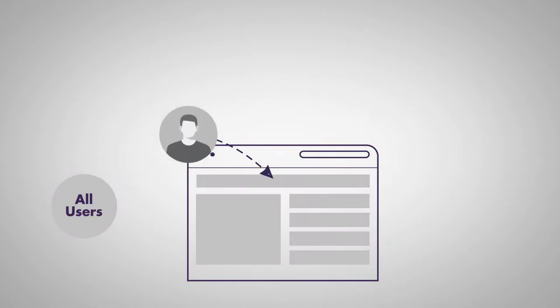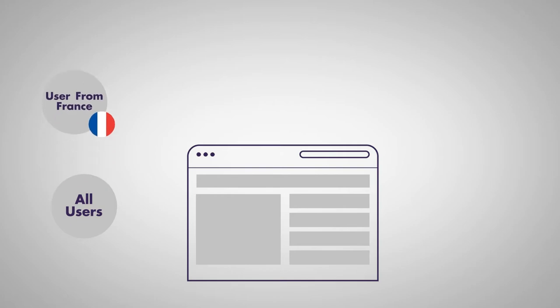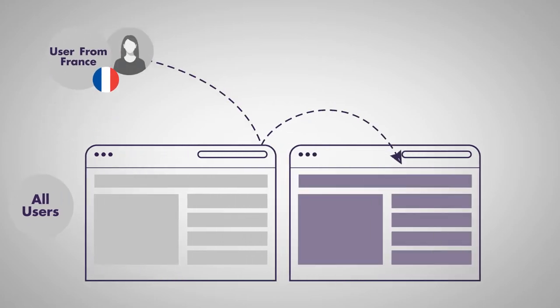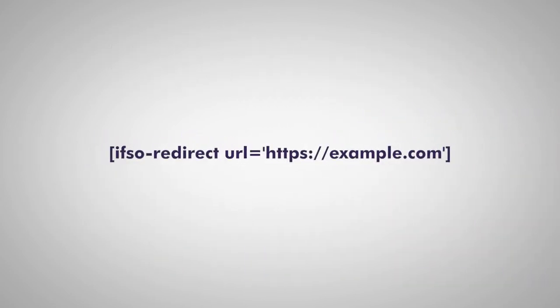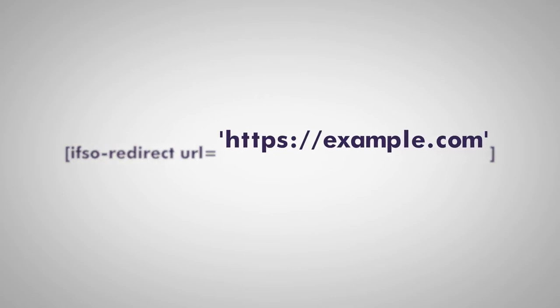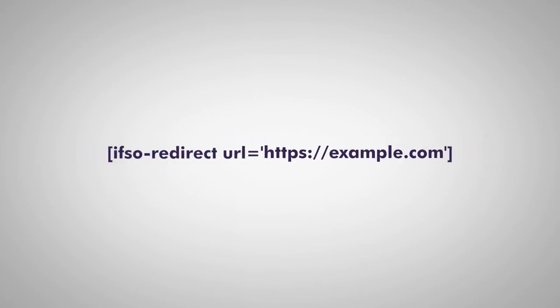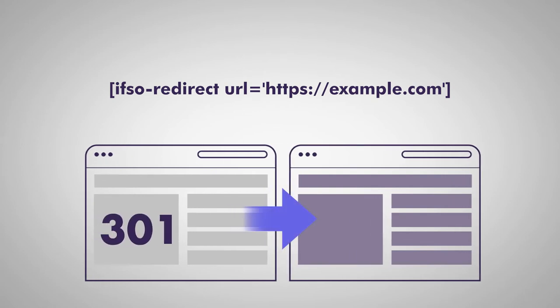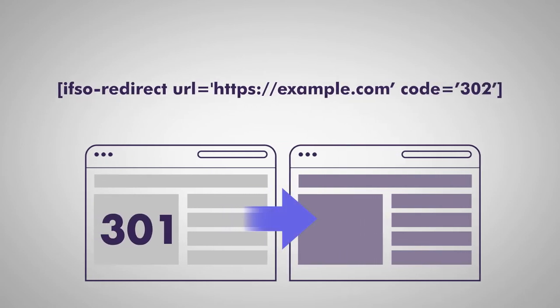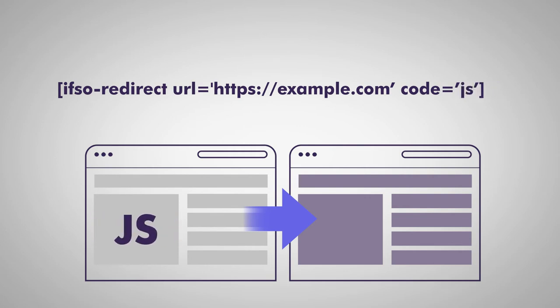You can use any If So condition to create a conditional redirect that will occur only if the condition is met. Creating a redirect using If So is done by pasting the shortcode: [if-so-redirect url='the URL you would like users to be redirected to']. By default, the shortcode will create a 301 redirect. You can add the parameter code=302 for a 302 redirect, or code=JS for a JavaScript redirect.